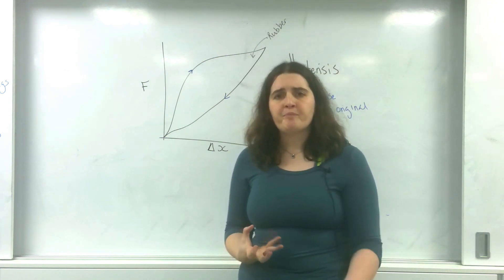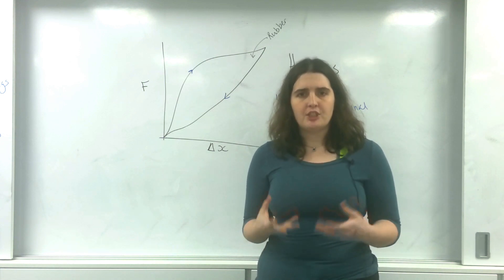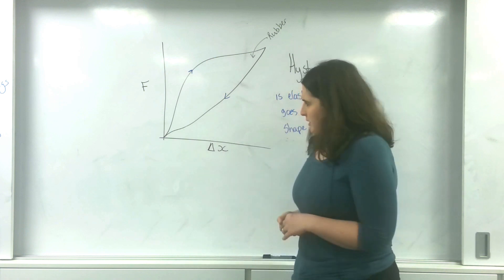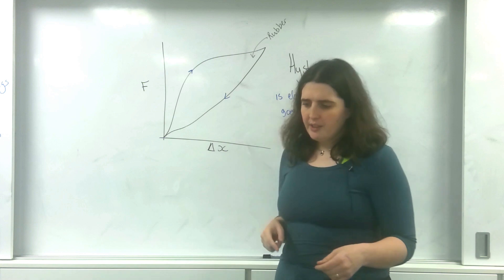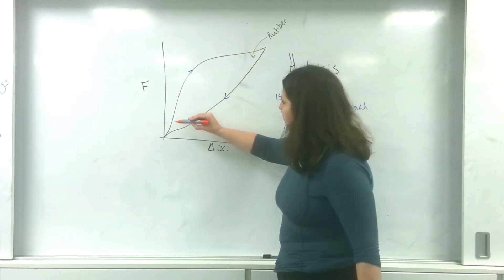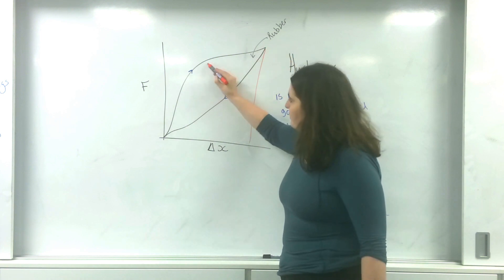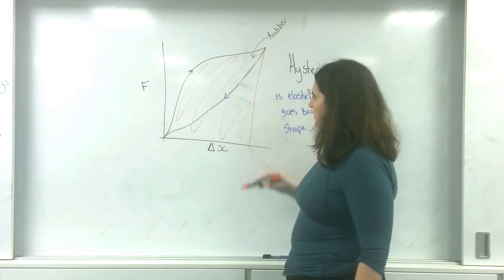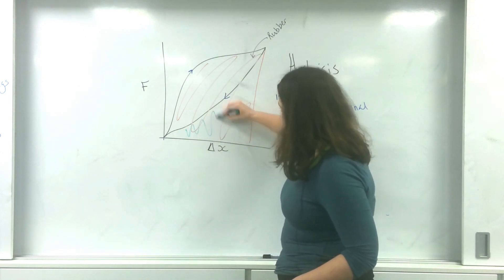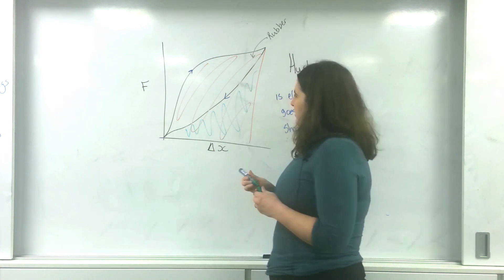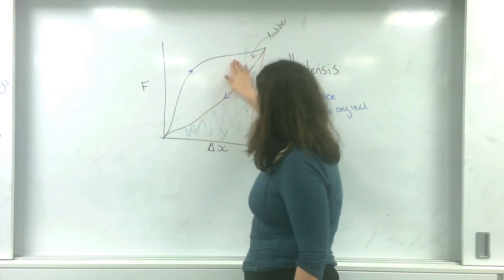As we said before, the area underneath the graph is the energy that was stored. If we look at the energy stored in the elastic band going up to this point, that's all of this energy. The energy that is released going back is only this smaller area. So what about the energy in the middle — what is it doing?